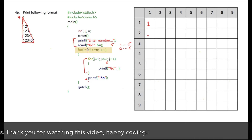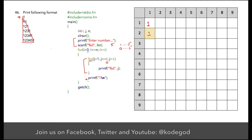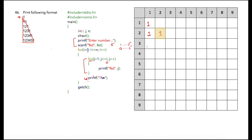After the first iteration, the value of i is incremented to 1. Then the inner for loop will be executed once, printing 1, then it comes out of the loop, and because of the newline 1 will be printed and the cursor moves to the next line. This same process continues till the fifth iteration. In the fourth iteration the output will be 1 2 3 and 1, then in the fifth iteration the output will be 1 2 3 4 and 1.